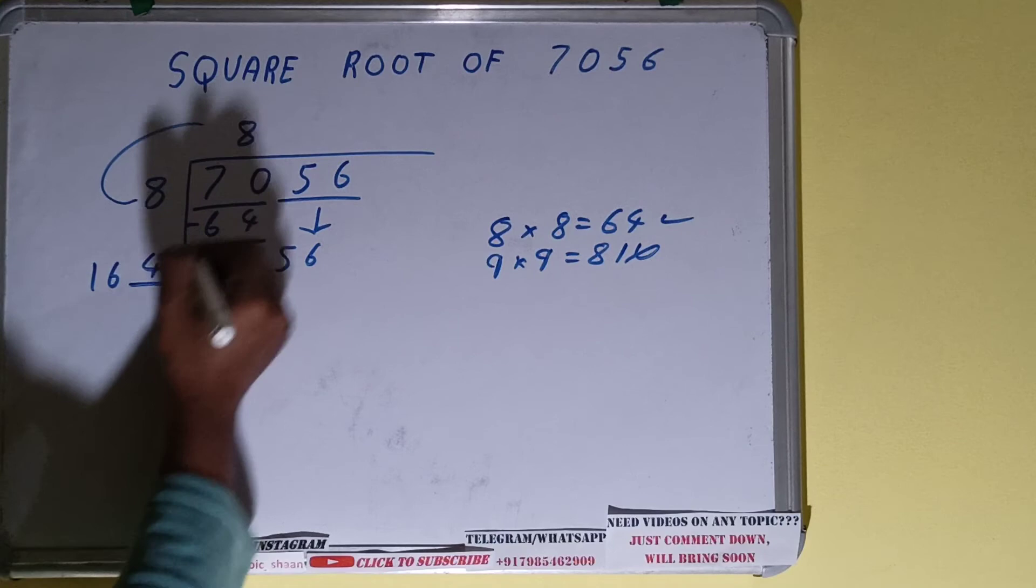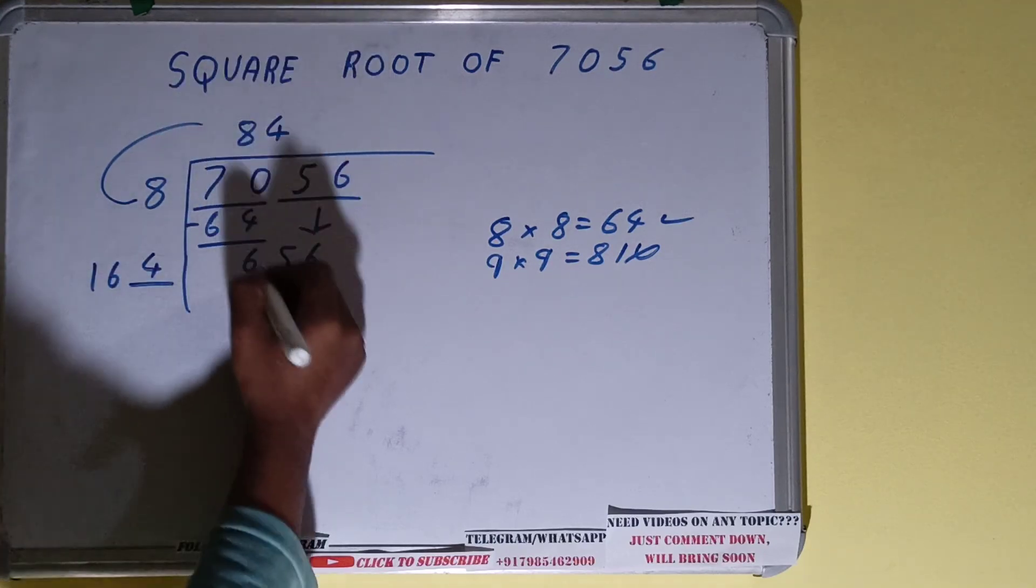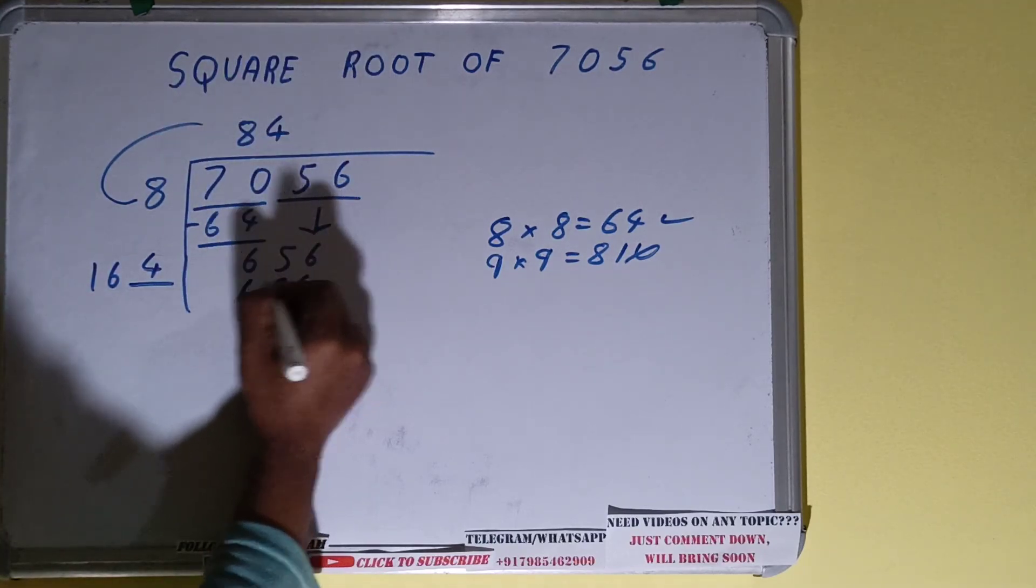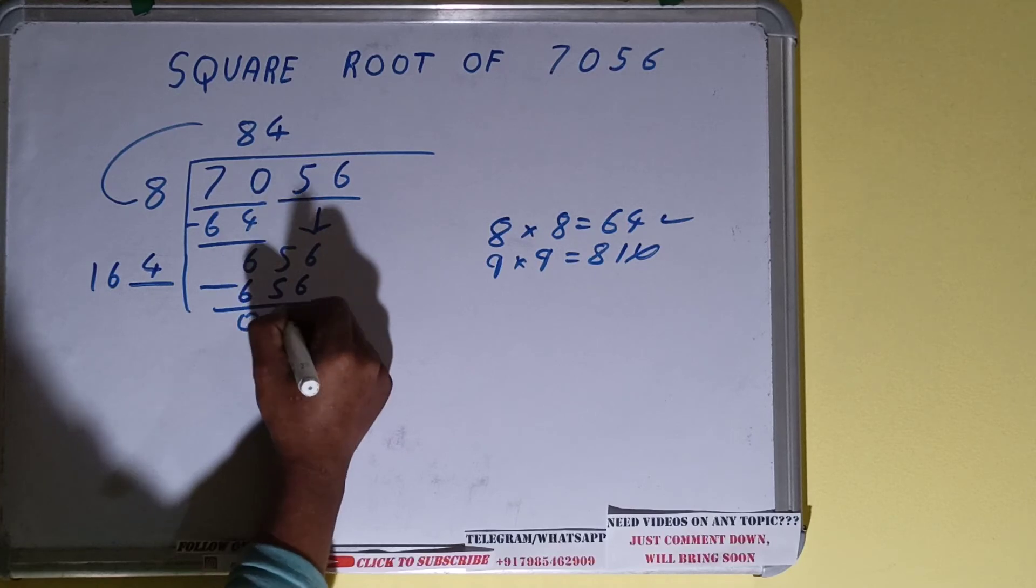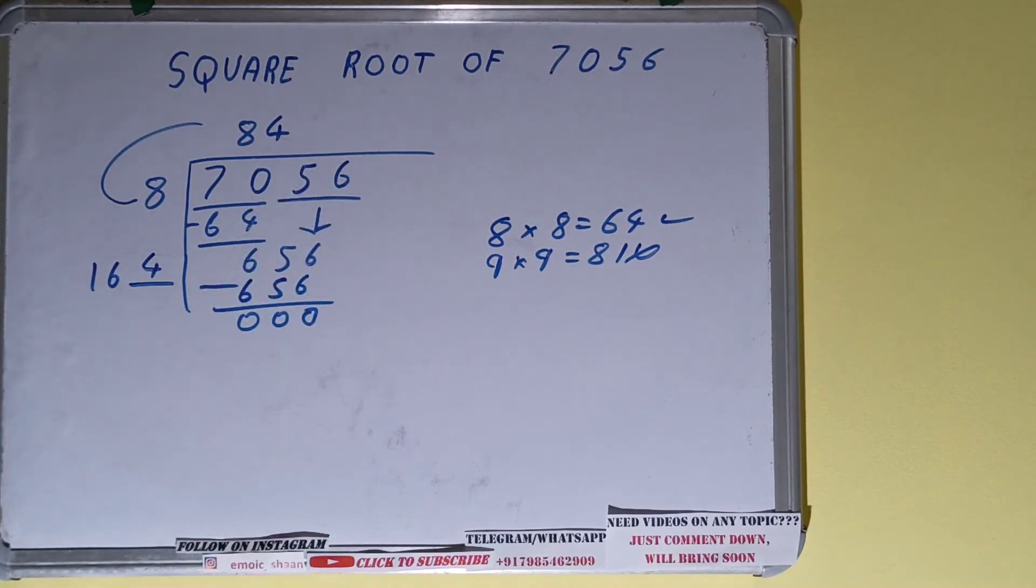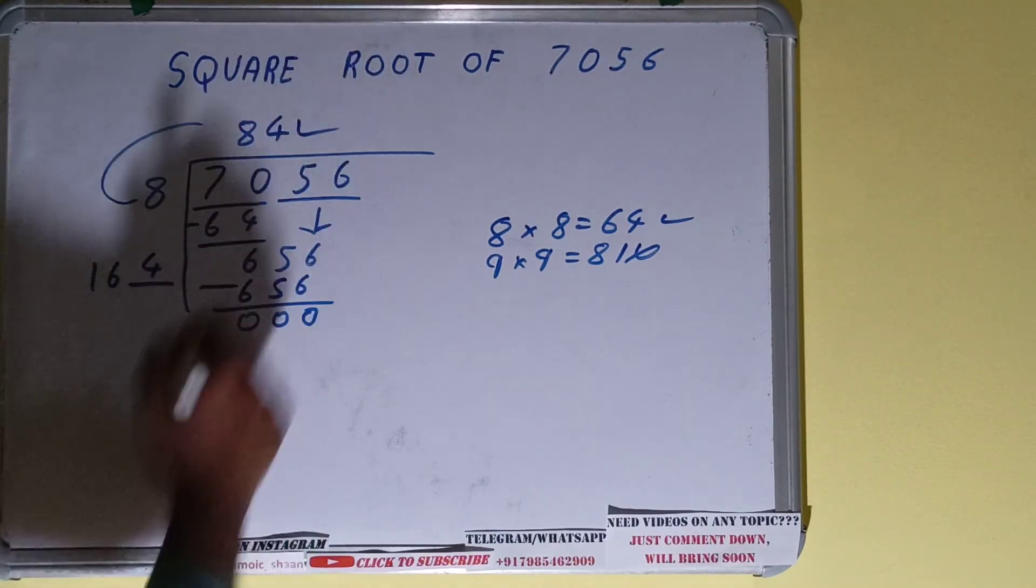And if we place 4 here, we can place 4 here also. It will be 656. Once subtracting, we will have the remainder is 0. Once you get the remainder is 0, whatever is in the quotient will be our answer.